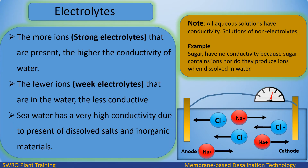The more ions — strong electrolytes — that are present, the higher the conductivity of water. The fewer ions — weak electrolytes — that are in the water, the less conductive.